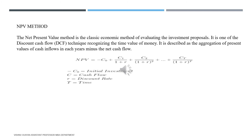Now moving on to the discounted cash flow methods. Discounted cash flow methods give precise importance to the time value of money. The value of one rupee today may not be the same as the value of one rupee tomorrow — the value may decrease over time. So, one lakh rupees invested now may be equivalent to two lakh rupees after five or ten years. This factor is considered in the discounted method.